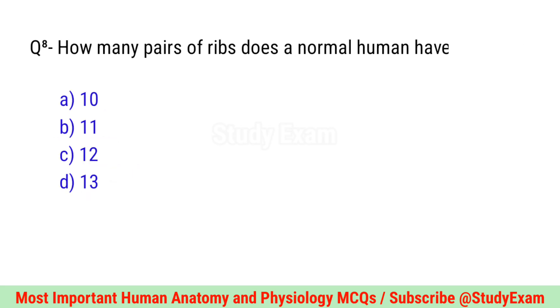Question number eight. How many pairs of ribs does a normal human have? Correct option is C. Twelve.